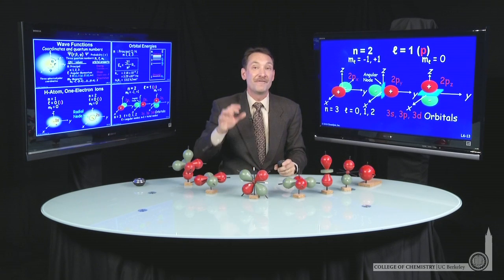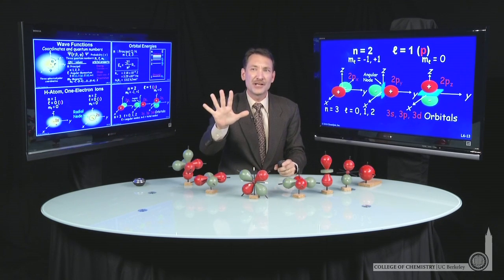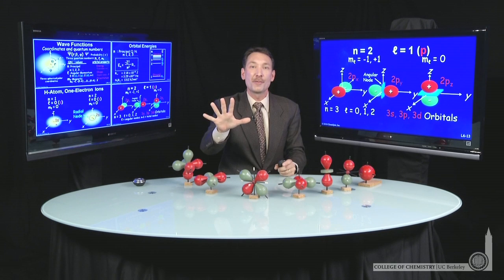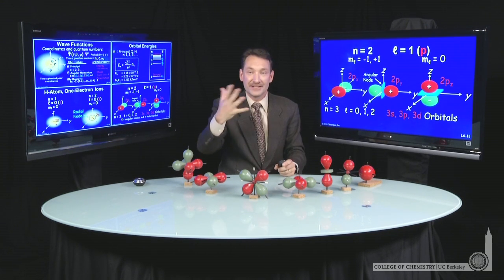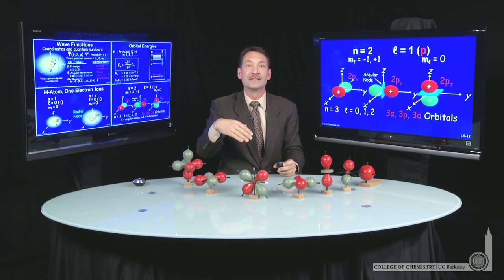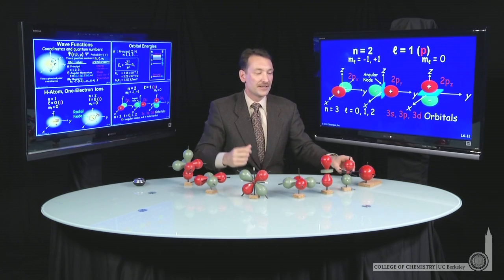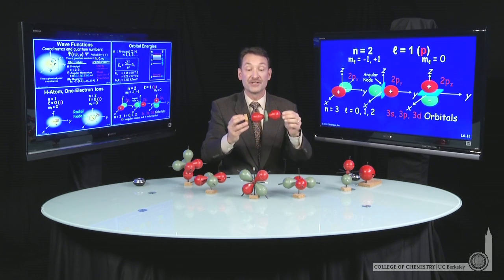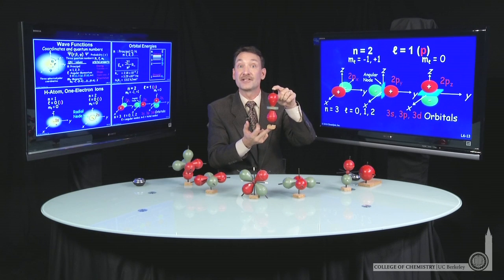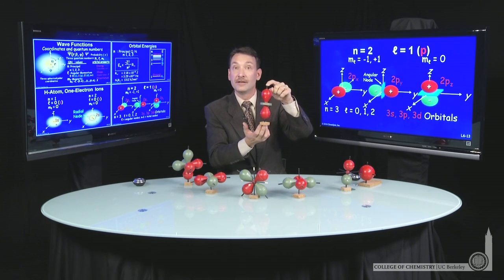l equal 2 is, we give the designation d. Five energy equivalent d orbitals that have different orientations in space. And the d orbitals, we're not so concerned that you know the exact spatial representation, but we've got them here. And they have more complicated designations. This, for instance, is a d orbital that lies along the z-axis, the dz squared orbital.